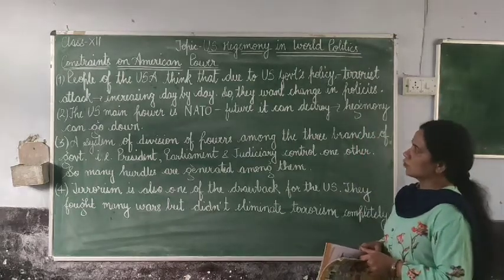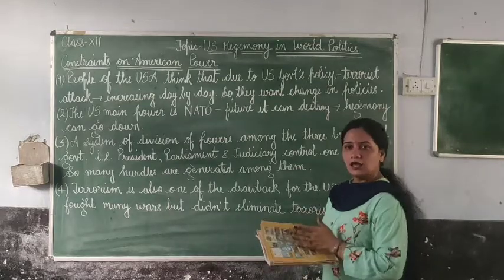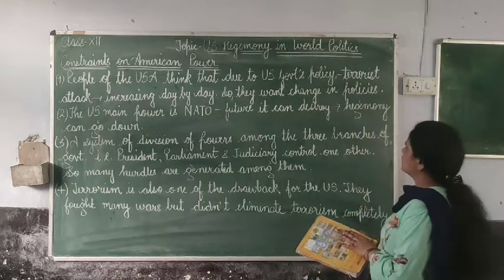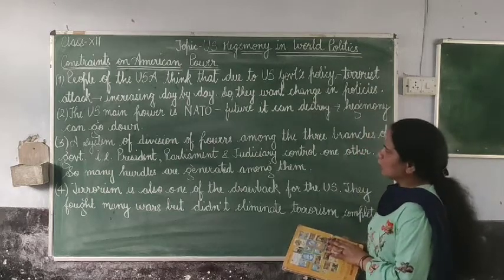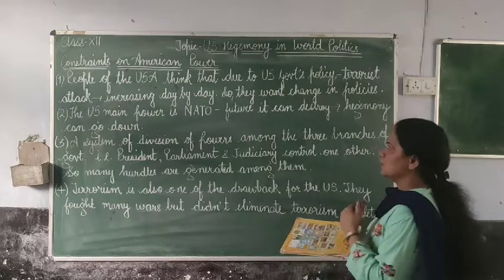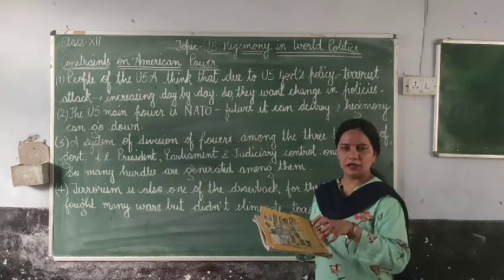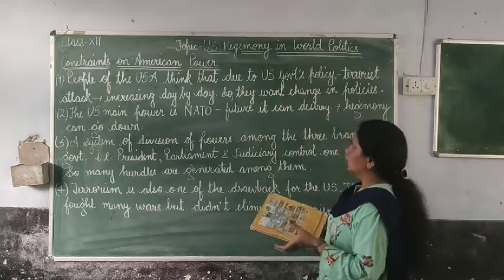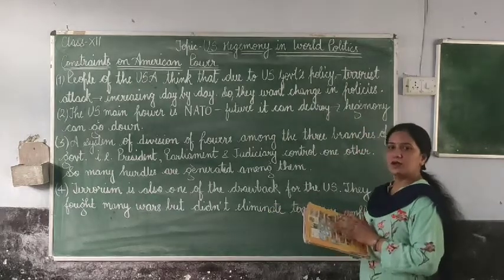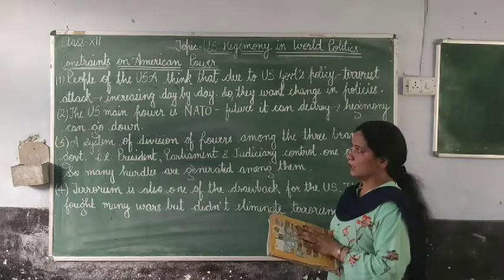Now our next topic is constraints on American power. Constraints means barriers or obstacles. People of the USA think that due to the US government's policies, terrorist attacks were increasing day by day, so they want a change in policies.